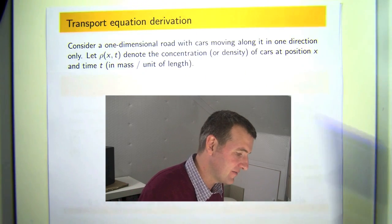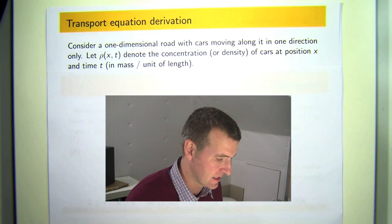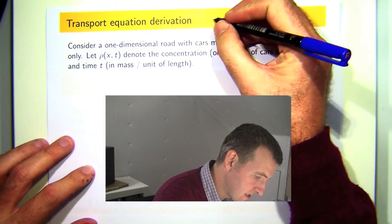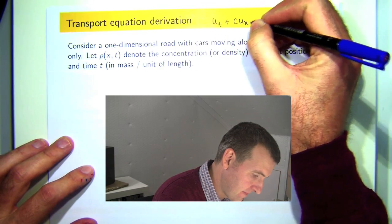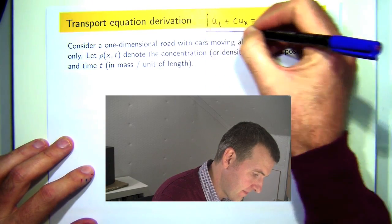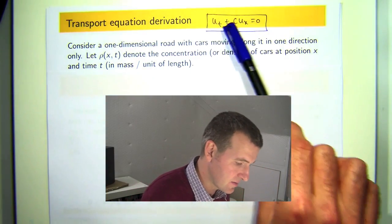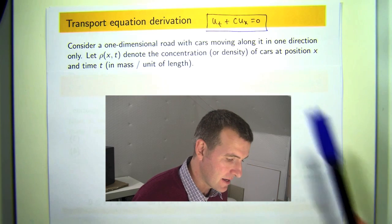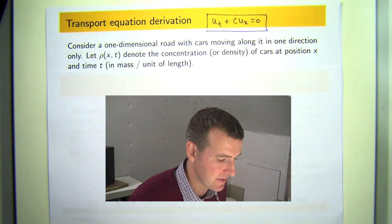In this presentation I'm going to give a derivation of the transport equation. The transport equation is just the following, where C is a constant and the subscripts denote partial differentiation. So u sub t means du dt.